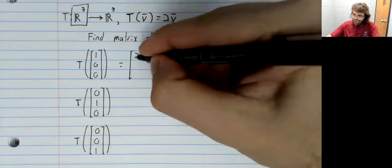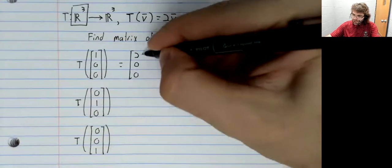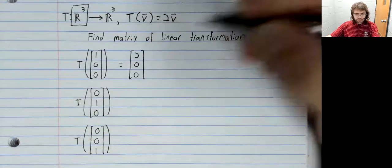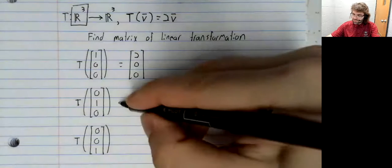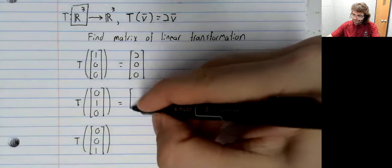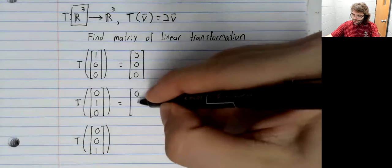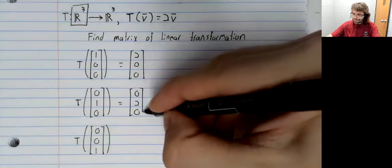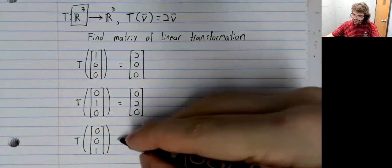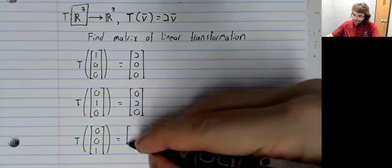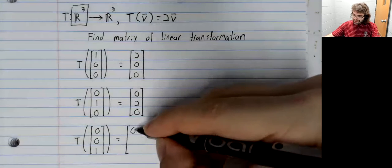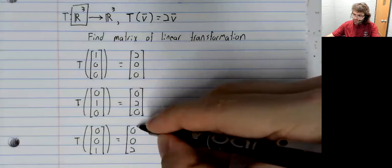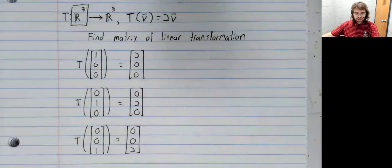Twice E1 is this, twice E2 is this, and twice E3 is this.